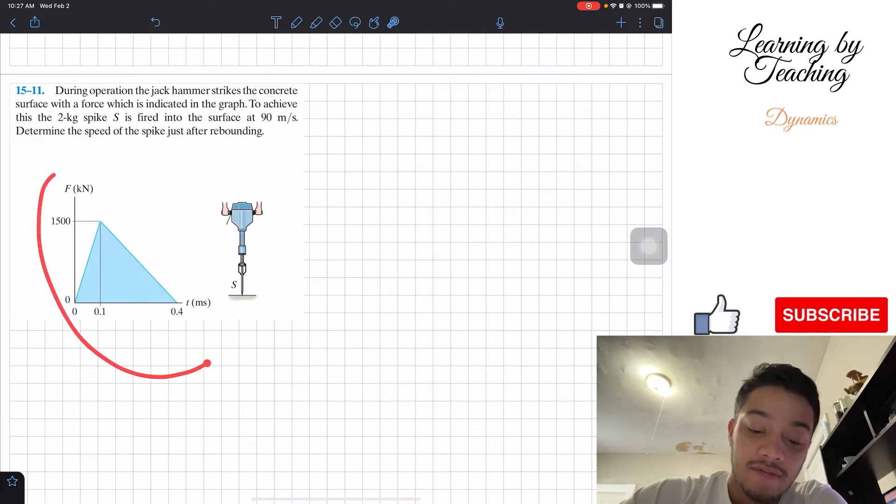So we're given in here first the graph of our force, and it's given in kilonewtons versus milliseconds. And as we can see, this is basically a triangular shape.